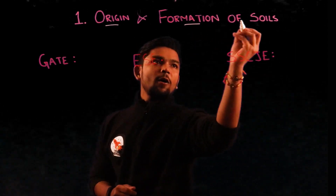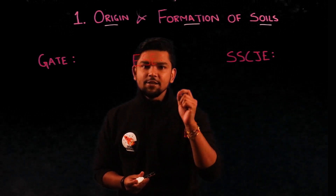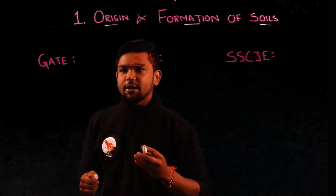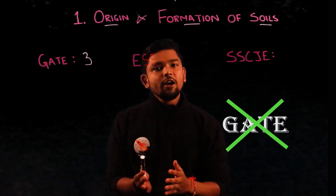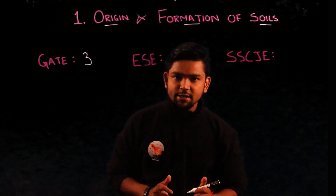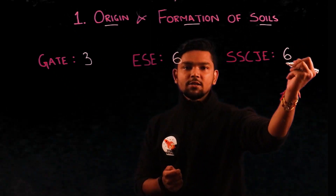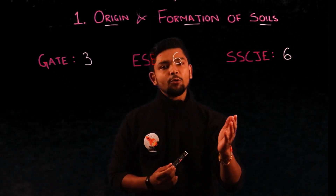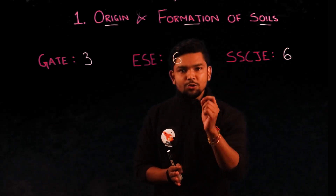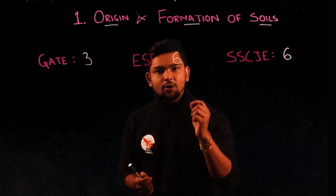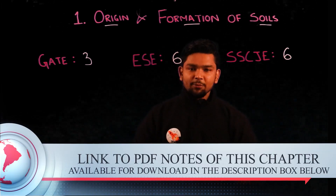Our very first chapter is origin and formation of soils. Before we start, let's look at the number of questions asked in different competitive examinations. For the past 35 years of GATE, only three questions have been asked from this topic, and this chapter was recently excluded from the GATE syllabus. For past 25 years of ESE, six questions were asked; similarly six questions were asked for past 15 years of SSCJ. Questions from this topic are very basic, and losing easy marks can cost your rank dearly, because hard questions are attempted by very few people but easy questions everyone attempts.